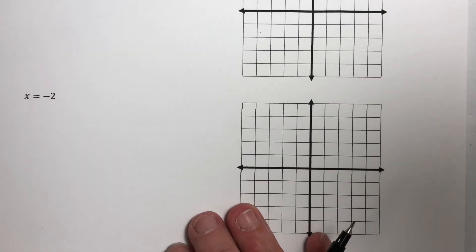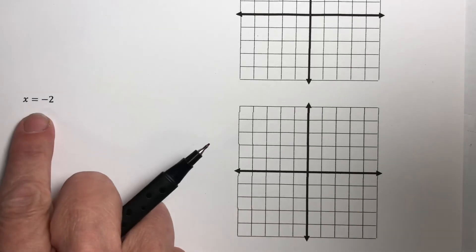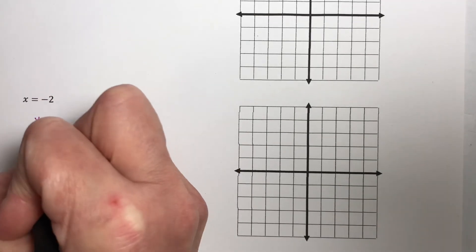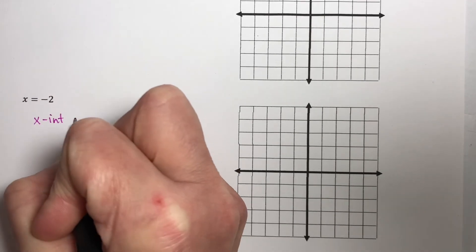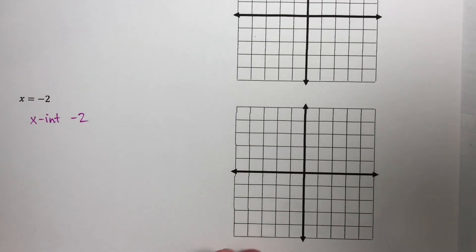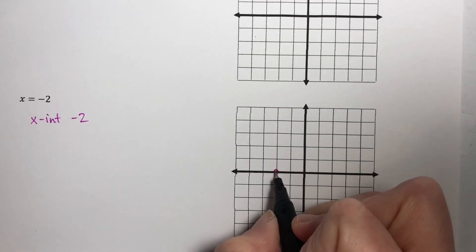Now let's do x equal to negative 2. So my x-intercept is negative 2. On the x-axis, negative 2 is right here.